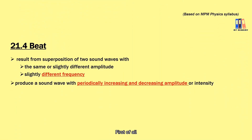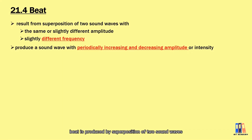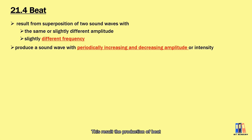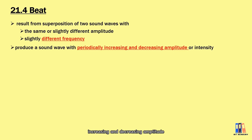Beat is produced by the superposition of two sound waves with slightly different amplitude and slightly different frequency. This results in the production of a beat, which is a type of sound that has periodically increasing and decreasing amplitude.